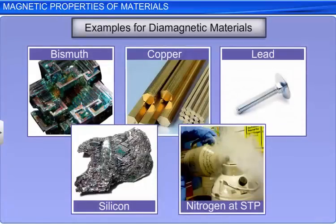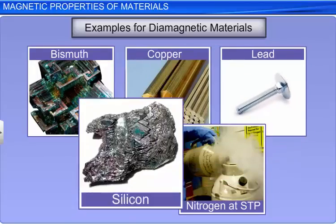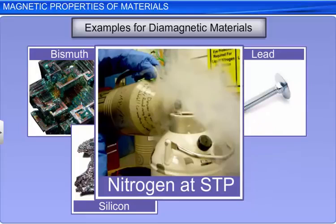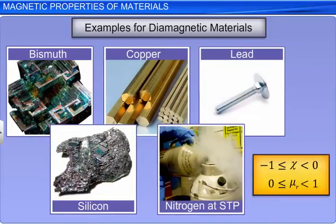Although diamagnetism is present in all materials, its effect is very weak in most of them. Some examples of diamagnetic substances are bismuth, copper, lead, silicon, and nitrogen at STP. Magnetic susceptibility of the diamagnetic substances is greater than or equal to minus one and less than zero. Relative magnetic permeability of these substances is greater than or equal to zero and less than one.